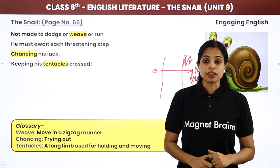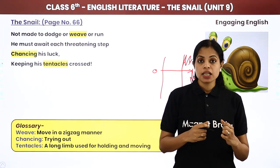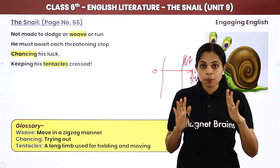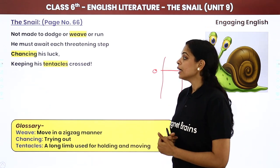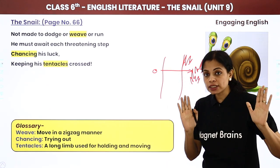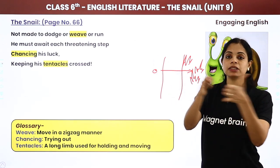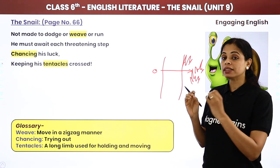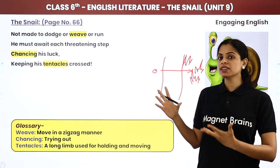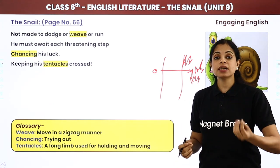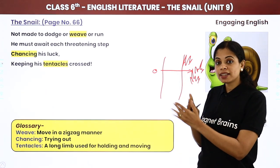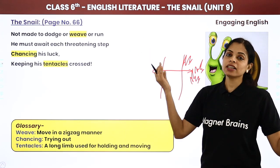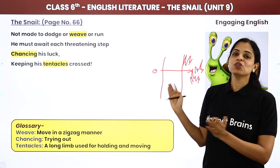'Not made to dodge or weave or run.' Ab snail joh hai, chahe koi kitni bhi speed se aaye, chahe koi cheez usko kuchelne wali ho ya koi usp pehiye rakhne wala ho, woh apni speed ko change nahi kar sakta. Woh jump nahi kar sakta, woh run nahi kar sakta, woh chup nahi sakta. Woh jaisa hai woh waisa hi rahega, usi speed mein chalega. 'He must await each threatening step.' Ab kyunki na woh bach sakta hai, na woh weave kar sakta hai — weave matlab ek zigzag manner mein jaisa se chalna hota hai — na wiesa chal sakta hai, na woh run kar sakta hai. Toh usko raaste mein aane waali saari muskilon ka dhek ke saamna karna padega. Kuch bhi ho sakta hai — koi creature aa sakta hai, koi gaadi aa sakti hai, koi bullock cart aa sakta hai, koi human aa sakta hai. 'Chancing his luck' — chancing ka matlab kya hota hai? Trying out. Uska sirf luck hai. Agar mar gaya toh mar gaya, warna woh doosri taraf tak pahunch jayega.